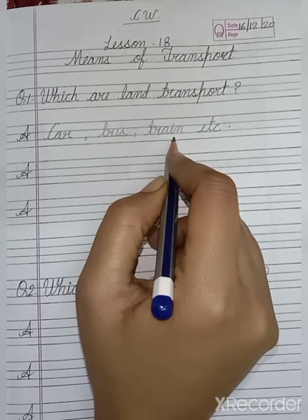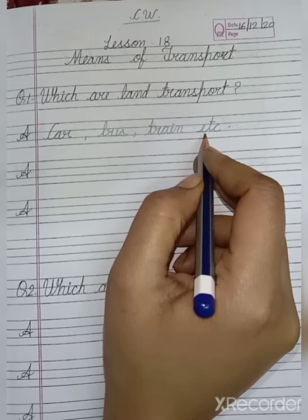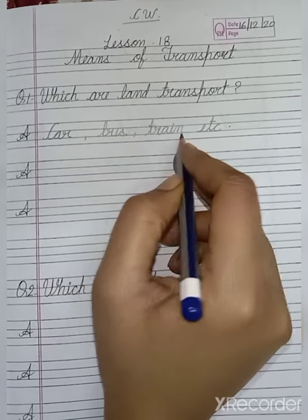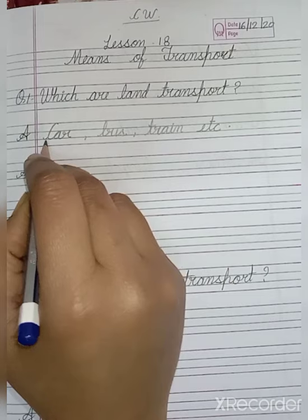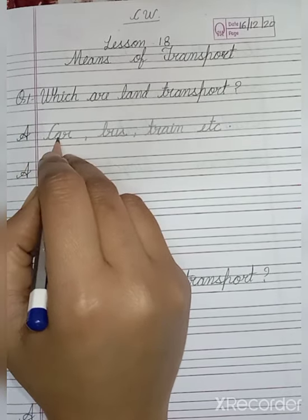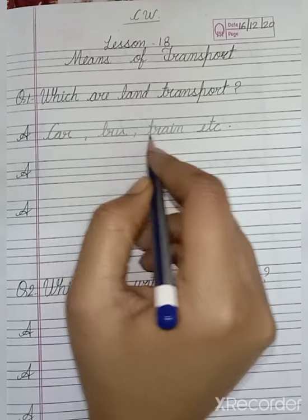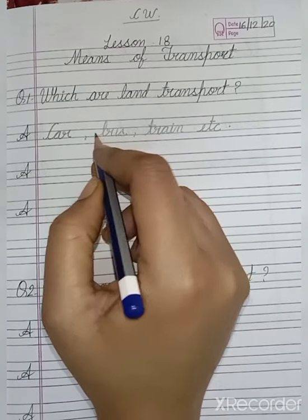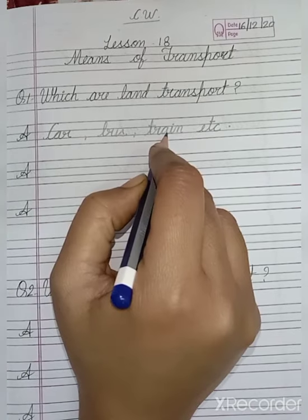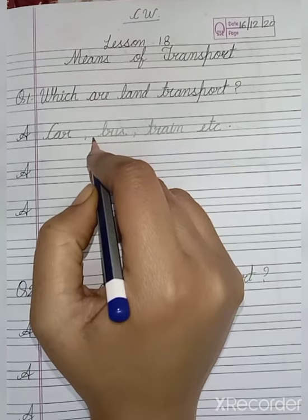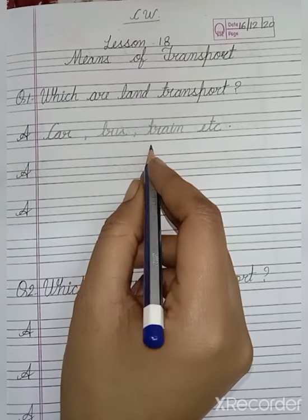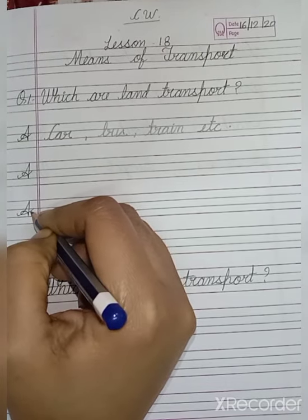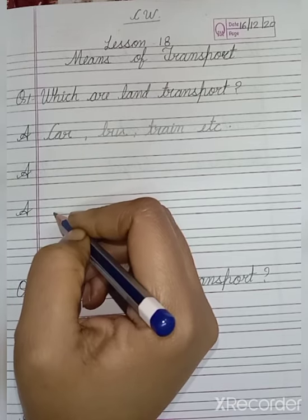Kyunki aap logon ne dekha na road pe kya chalte hain - car, bus, train ke alawa aur bhi cheezein road pe chalti hain like bike, tempo, auto. But yahan par hum abhi teen cheezon ke naam hi likhengi. Aap ko zyada likhni ki chalti hain to aap ko ye three spellings se learn karni hai: C A R car, B U S bus, T R A I N train, etc. Aap ko ye three names learn karne hai aur isko proper formation me likhna hai. Aap ko ye three times likhne hai - one, two, three. Aur achhe se learn karna hai.